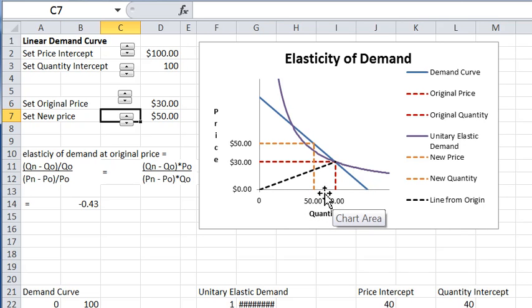the new quantity minus the old quantity, and we look at it as a percentage of the original quantity. But obviously this number is going to be bigger the bigger the price increase is.